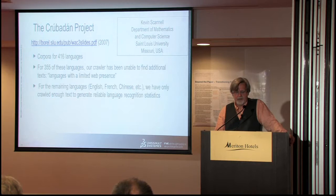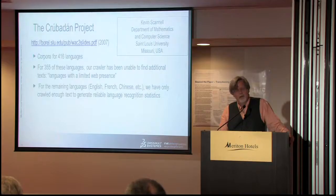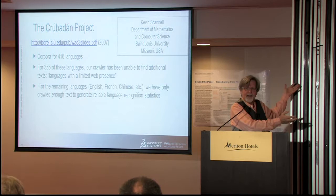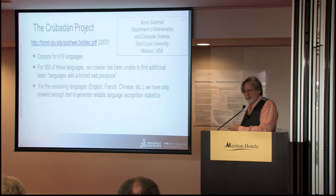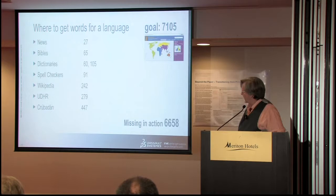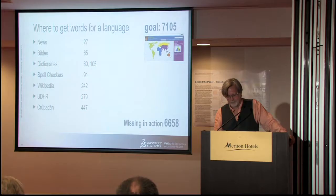In 2007, Scannell found corpora for 460 languages but 355 had a very limited web presence — very small amount of text. So if you want to go back to the original problem of making a large word sketch or a large map of how words are used, you can't do it for those languages. You can do it for the rich languages; you can't do it for the poor languages using the web. You can get up to about 447 using these techniques. This is a real effort for finding everything you can about the language, and we're short for 6,000 languages.